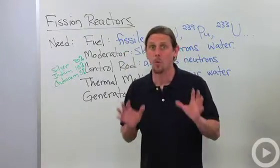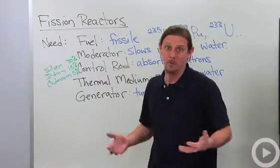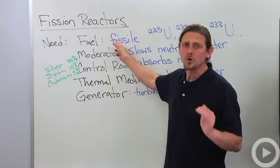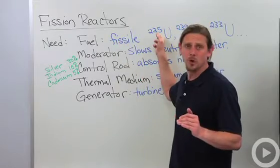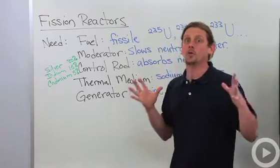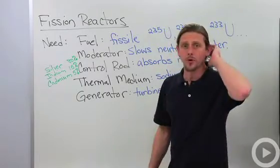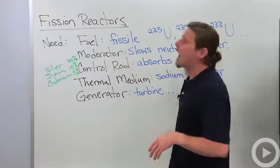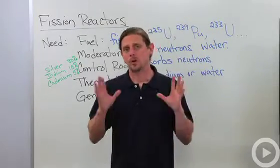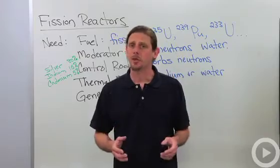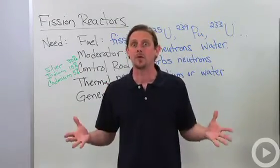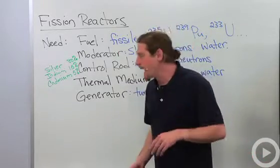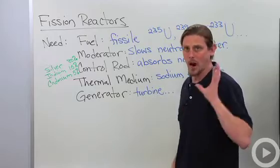There are a couple of things that need to work for this to take place properly. We need our fissile material. The standard choices are uranium-235, which is called enriched uranium; plutonium-239, which is just called plutonium; and uranium-233. Uranium-233 is a special one — it's used in something called a breeder reactor, which not only gives you energy but also gives you more fuel. Those are our fissile materials — that's our fuel.